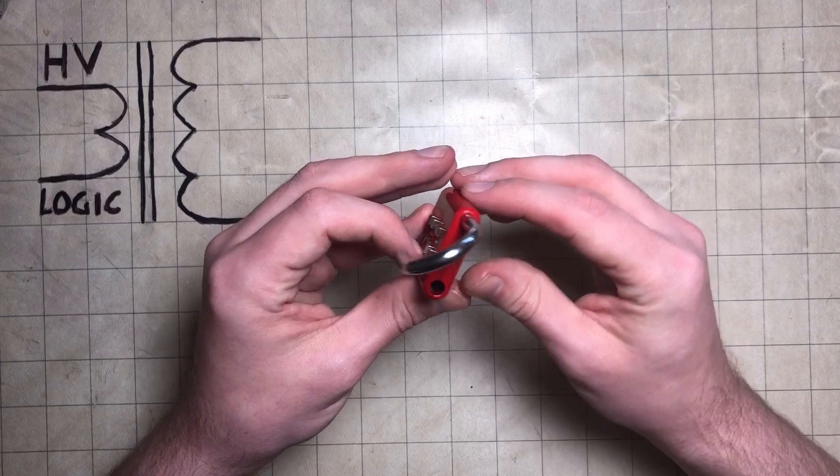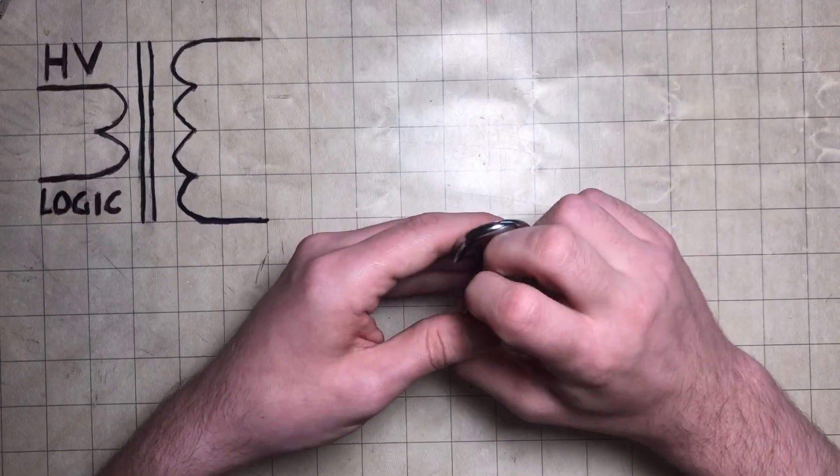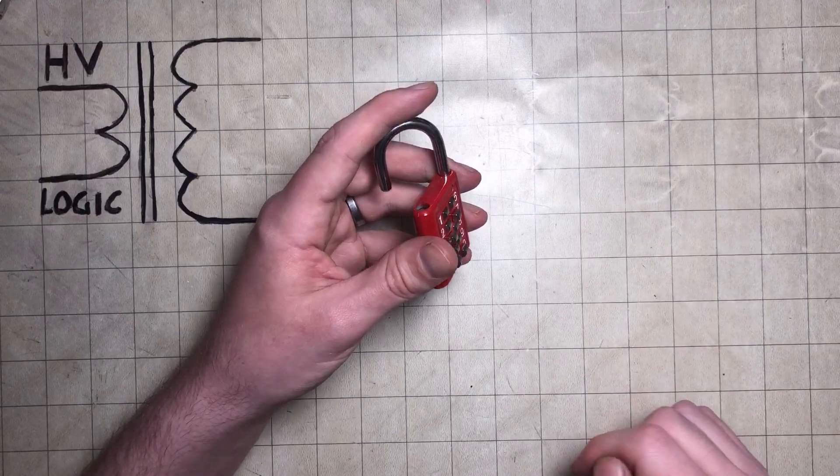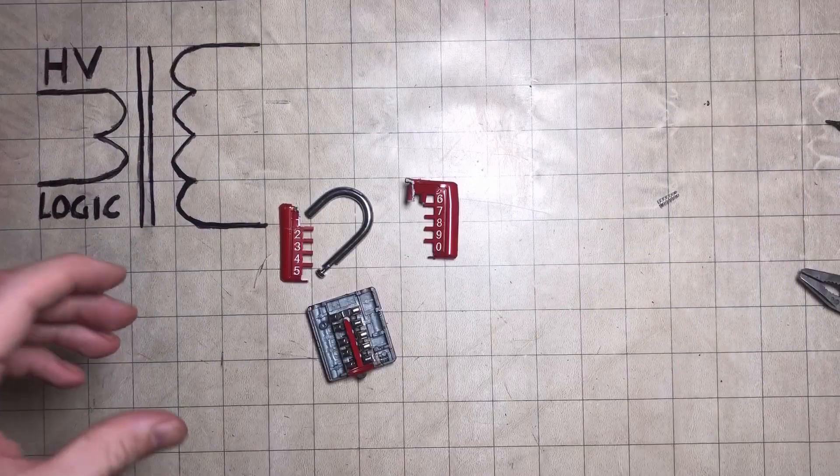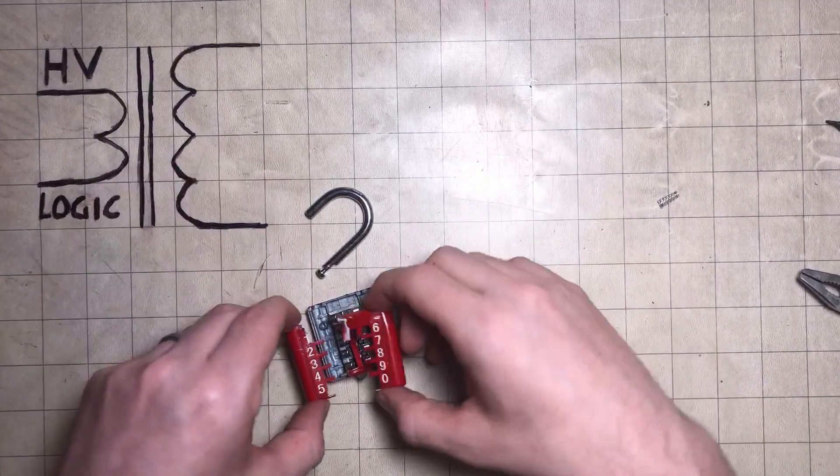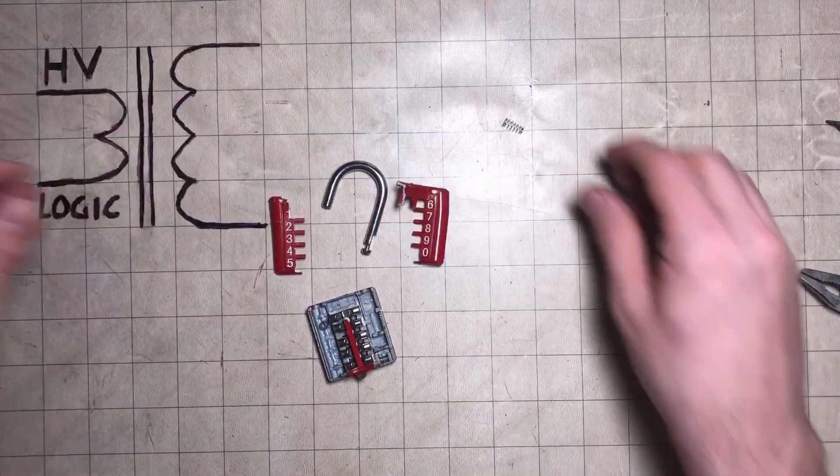Part of me is tempted to crack this thing open and see what's inside. But I'm pretty sure that once I do that, we'll never get back together again. But we do it. It wasn't expensive. So I have ripped the front cover off, put the shackle out and the shackle's spring.